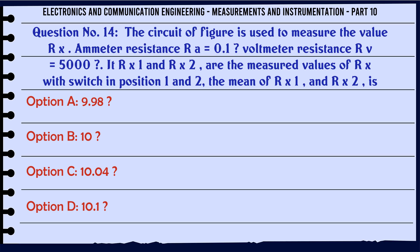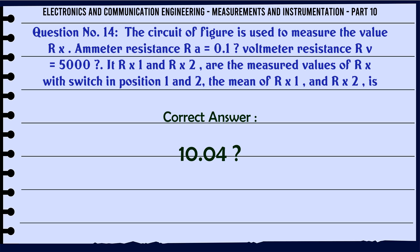The circuit is used to measure the value Rx. Emitter resistance R = 0.1, voltmeter resistance Rv = 5000. If Rx1 and Rx2 are the measured values of Rx with switch in position 1 and 2, the mean of Rx1 and Rx2 is: A) 9.98, B) 10, C) 10.04, D) 10.1. The correct answer is 10.